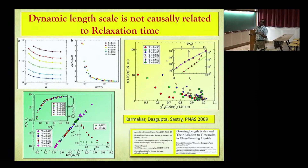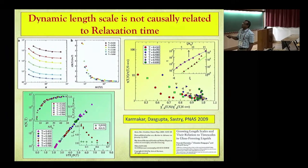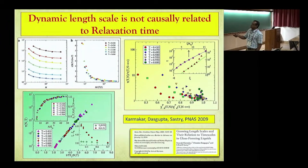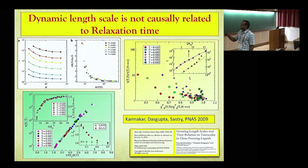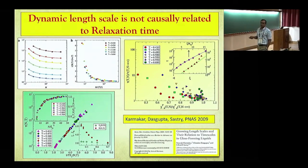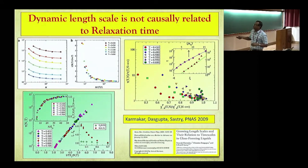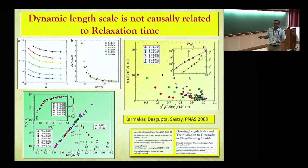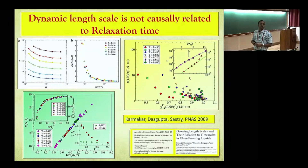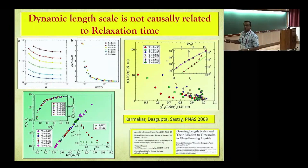We also found, in a 2009 paper, that if you look at relaxation time as a function of system size, you cannot collapse this data using the dynamic length scale. This suggests the dynamic length scale is probably not causally related to the relaxation time. You can plot relaxation time as a function of system size and the four-point susceptibility for various system sizes, and they do not show a strong correlation. On the other hand, if you compute the configurational entropy following Adam-Gibbs theory, you can show that the relaxation time and its system-size dependence can be completely understood using configurational entropy, which is a static quantity.